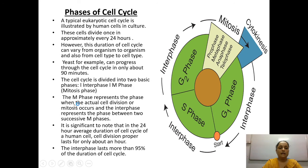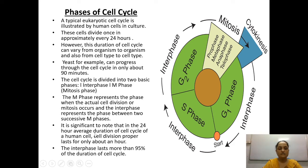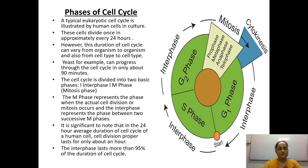The M phase represents the phase when the actual cell division or mitosis occurs, and the interphase represents the phase between two successive M phases. The M phase is very short — only division happens there. In a 24-hour average cell cycle of a human cell, only one hour is for cell division and the remaining 23 hours are for the preparation phase.